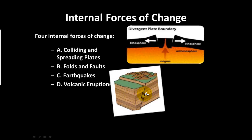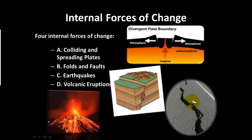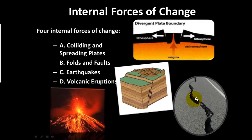Folds and faults occur when the plates that make up the Earth's surface shift, causing the land to actually shift up or down. Earthquakes occur when the plates spread. Volcanic eruptions happen when the magma underneath the crust rushes to the surface.